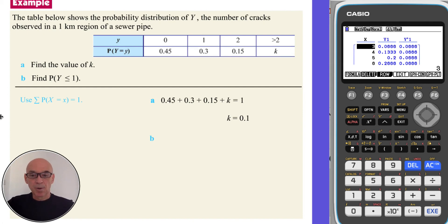In part B, to find the probability that Y is less than or equal to 1, we note that Y can either then be 0 or 1. And we simply add those two probabilities, given an answer of 0.75, as shown.